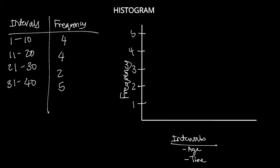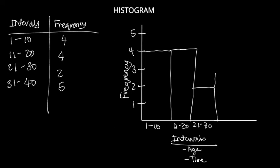Then we can draw those intervals onto this graph. So the first interval, which is 1 to 10, has a frequency of 4. The next one is 11 to 20, that is also 4. The next one is 21 to 30, that has a frequency of 2. And the last one is 31 to 40, that has a frequency of 5.